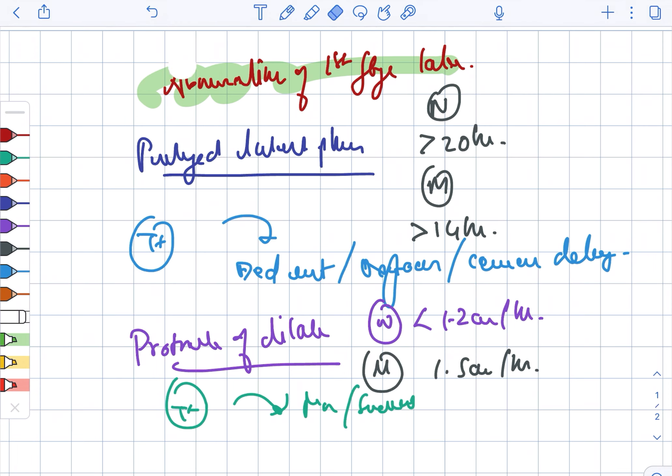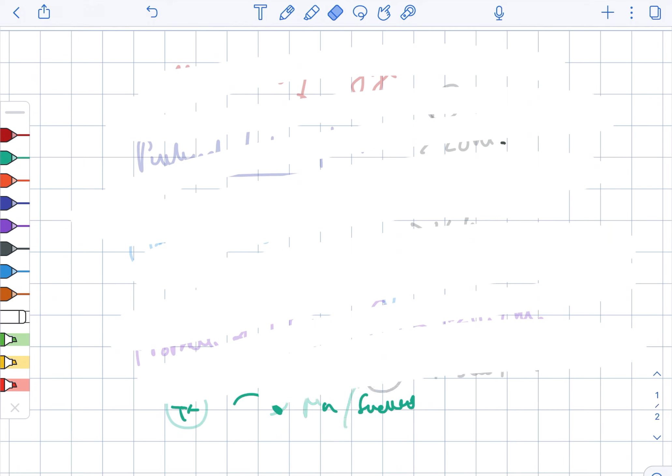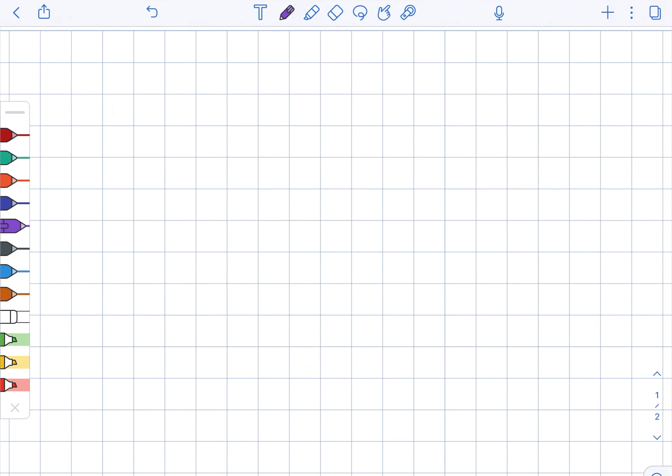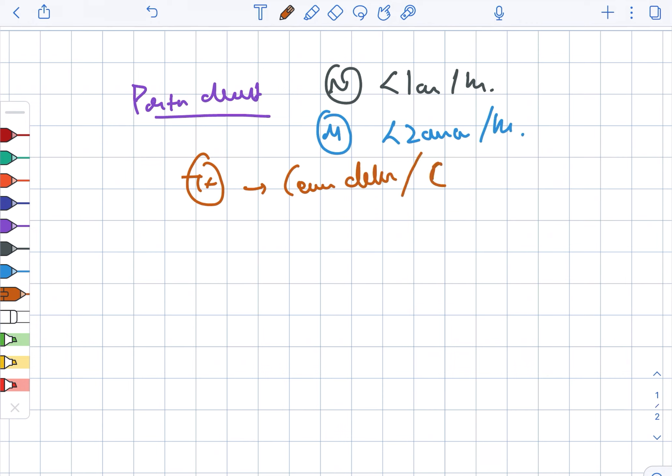Next, looking at the protraction of descent. In case of nullipara, it is less than 1 cm per hour. In case of multipara, it is less than 2 cm per hour. The treatment here would be cesarean delivery for CPD.